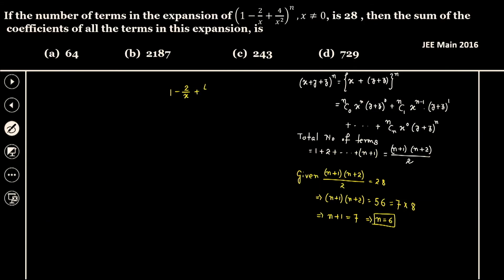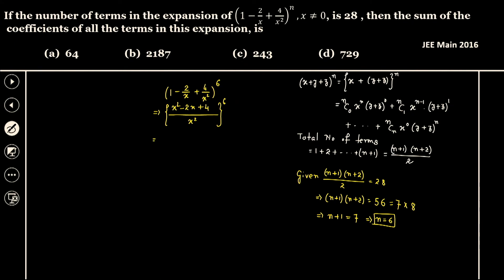The given expression is 1 minus 2 over x plus 4 over x squared, whole to the power 6. Simplifying by taking x squared as the LCM, we get x squared minus 2x plus 4 over x squared, whole to the power 6. That gives us 1 over x to the power 12, times x minus 1 whole squared plus 3, whole to the power 6.